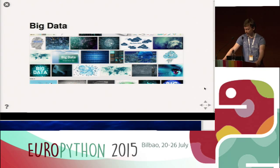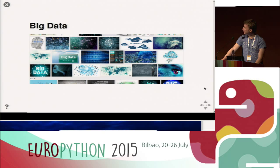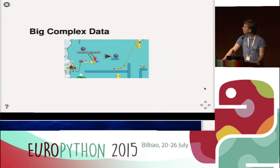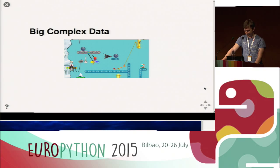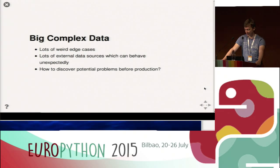We work with big data. If you do an image search for big data, you will find that big data is shiny, clean, and most importantly blue. From my experience, big data is often not shiny and not clean. It can be very complex and dirty and nasty to work with — but it's definitely blue. So big data is really a breeding ground for weird edge cases and things that can go wrong. We have to find ways to protect ourselves and discover potential problems before production.